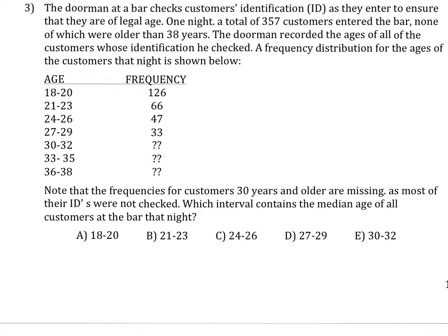We want to find the median age of those customers. The median is found at n plus 1 over 2's observation. Since there's 357, then there's 358 divided by 2.